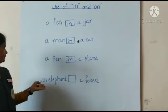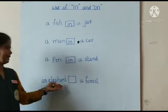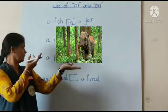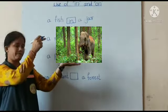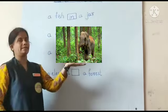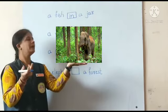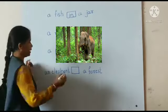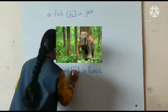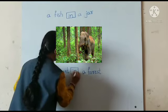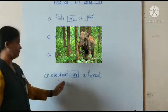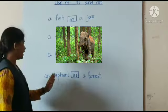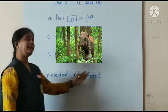Next example. An elephant in a forest. Where is the elephant, children? An elephant is in a forest. What do we have to write here, children? We write 'in'. An elephant is in a forest.